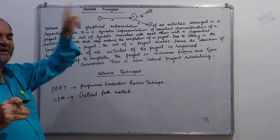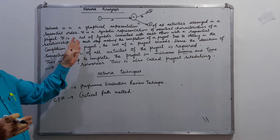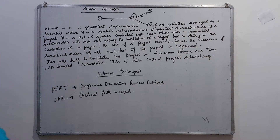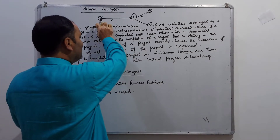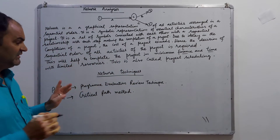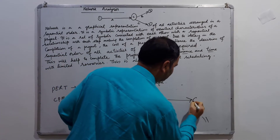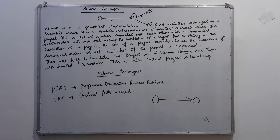An event is a representation of the beginning and the end points of an activity. When a project starts and ends, we have a start event and an end event. A path is an unbroken chain of activities connecting the initial event to some other event — it is an unbroken chain.